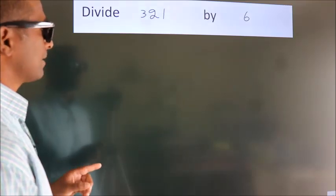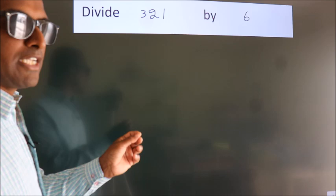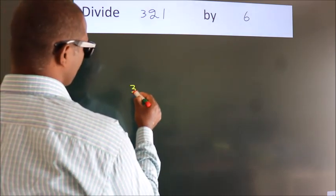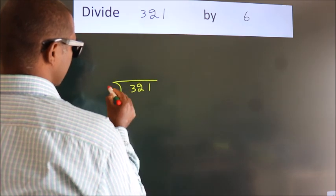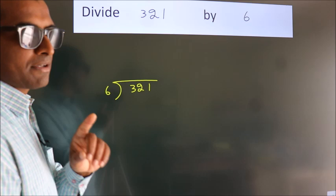Divide 321 by 6. To do this division we should frame it in this way. 321 here, 6 here. This is your step 1.